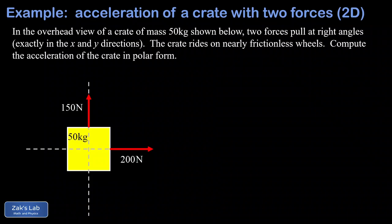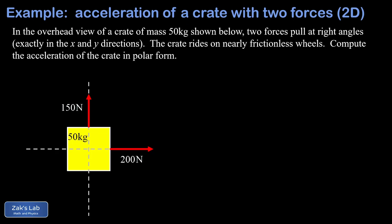In this problem, we're given a crate of mass 50 kilograms sitting on frictionless wheels, so friction is negligible, and we're told there are two forces pulling on the crate in exactly the x and y directions.